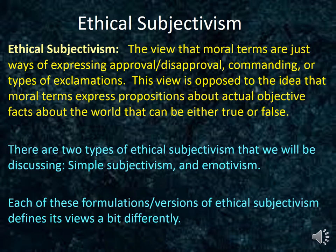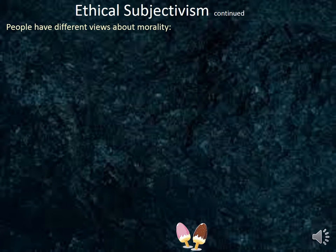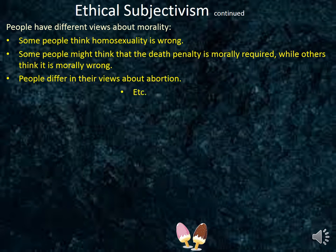Each of these versions of ethical subjectivism defines its views a bit differently. James Rachels uses the example of homosexuality in his books to illustrate ethical subjectivism, though another example could work just as well. People have different views about morality. Some people think homosexuality is wrong, some people think that the death penalty is morally required while others think it is wrong, and people differ about their views on abortion, and so forth.